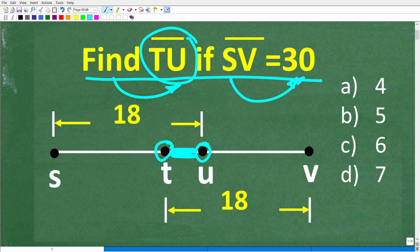But we're being told that the distance from point S to point V is 30 units. So here's point S and here's point V. So from here to here, that's 30 units. But we have some additional information here as well. From point S to point U, that's 18 units. And from point T to point V, that's 18 units.